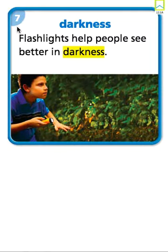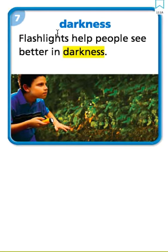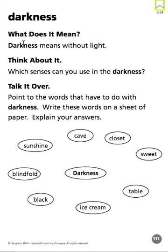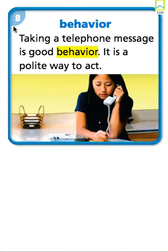Our seventh vocabulary word: darkness. Flashlights help people see better in darkness. Let's read it together — darkness. What does it mean? Darkness means without light. Darkness.